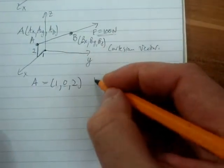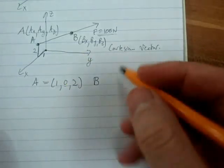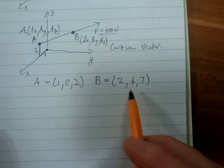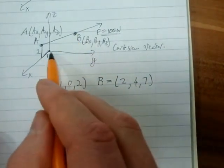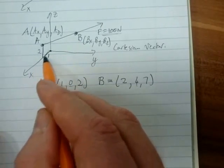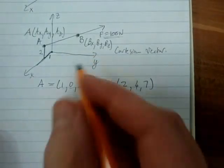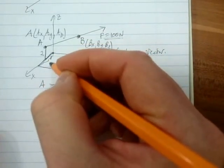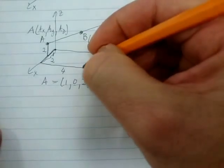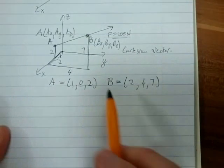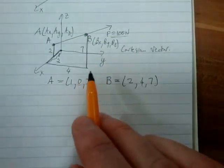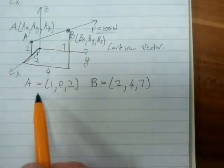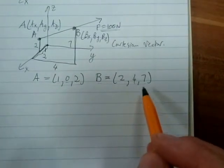What about B? Let's say B is equal to 2, 4, and 7. That means that point in space requires me to move two units in the X direction, four units in the Y, and then seven units in the Z direction.